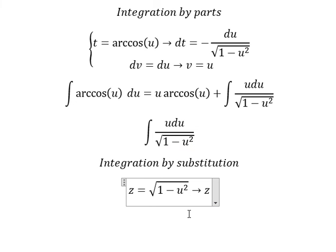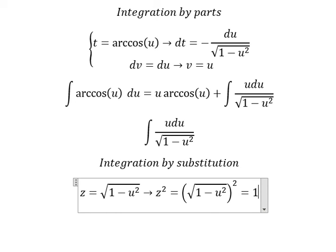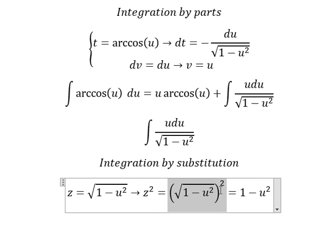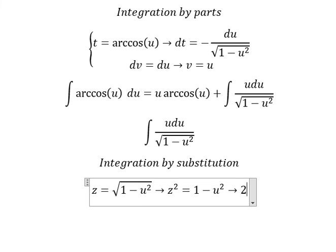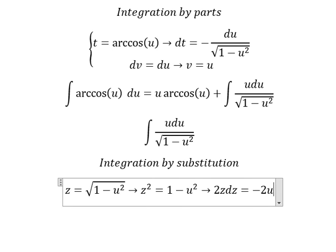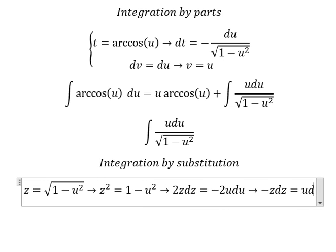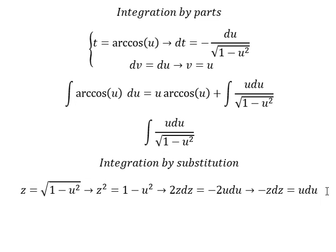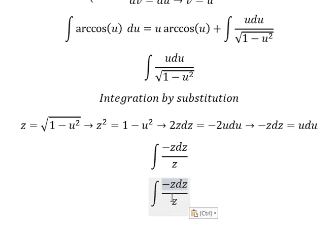We square both sides to cancel the square root, so you get z squared equals 1 minus u squared. Next, we do the first derivative for both sides and get 2z dz equal to negative 2u du. We divide both sides by negative 2, so the square root term changes to z, and u du changes to negative z dz. Simplifying, you get negative dz.